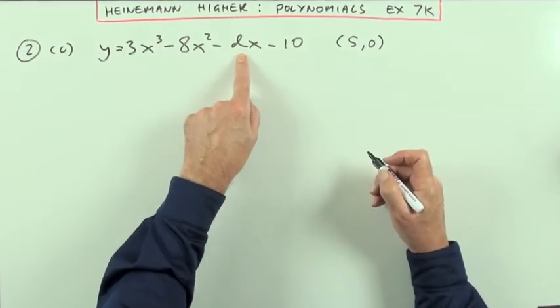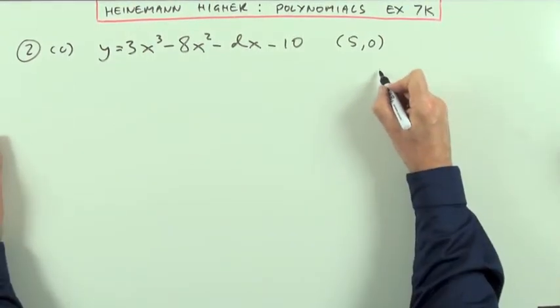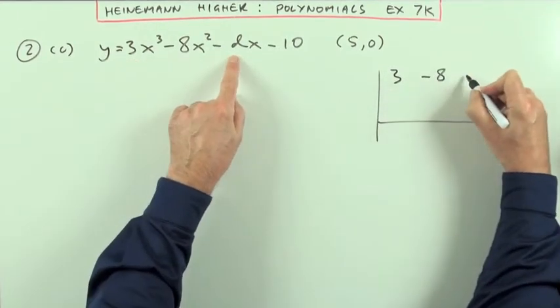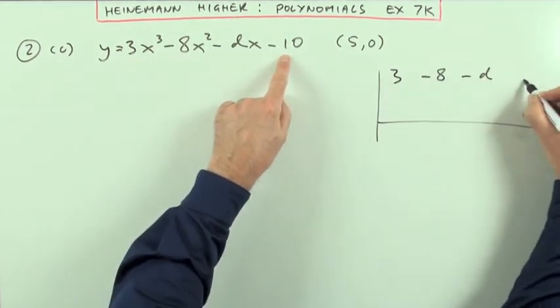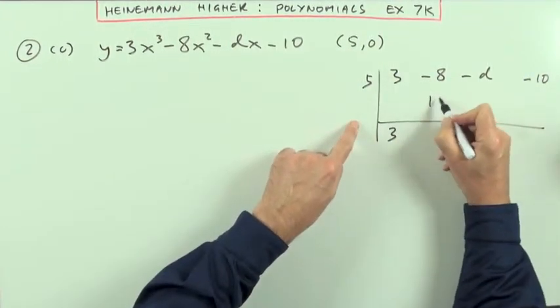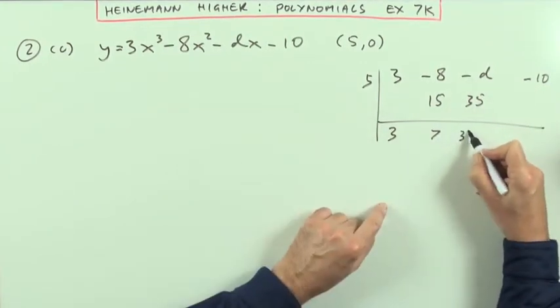This time d's slightly further in, so when I do my synthetic division I'll have to pick up that d and carry it along for a little while. Well, synthetic division, my coefficients are: 3, negative 8, negative d, leave a bit of a bigger space here, negative 10. And add it down, multiply it up, add it down, multiply it up, add it down, 35 minus d, multiply it up, 15...